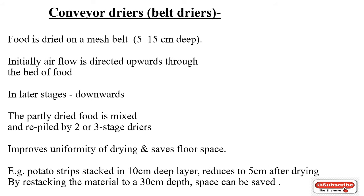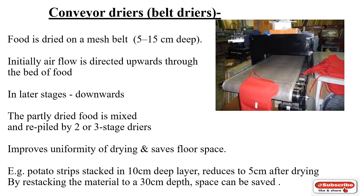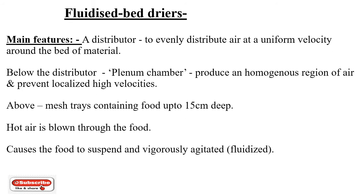The next one is the conveyor dryer, also called a belt dryer. The food is dried on a mesh belt 5 to 15 centimeters deep. Initially, airflow is directed upwards through the bed of food, and in later stages downwards. The partly dried food is mixed and redistributed by two or three stage dryers, improving uniformity of drying and saving floor space. For example, potato strips stacked in a 40 to 10 centimeter deep layer are reduced to 5 centimeters after drying; by restacking the material to a 30 centimeter depth, space can be saved.